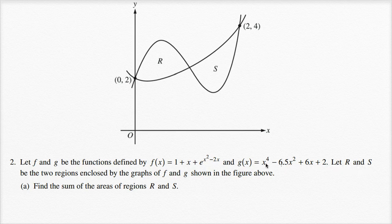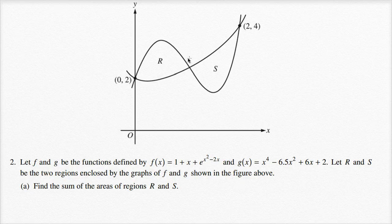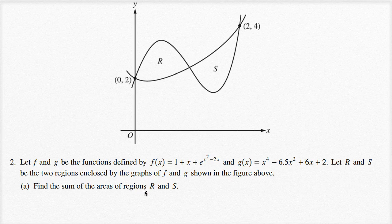Let R and S be the two regions enclosed by the graphs of f and g shown in the figure above. Here I have the graphs of the two functions and they enclose regions R and S. The first thing we need to figure out is find the sum of the areas of regions R and S.